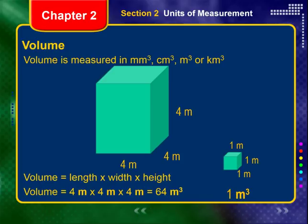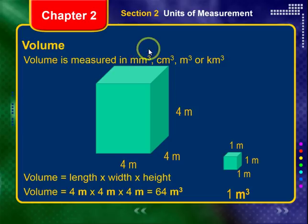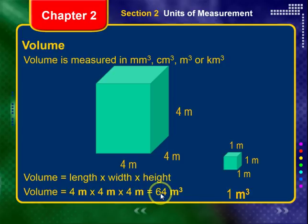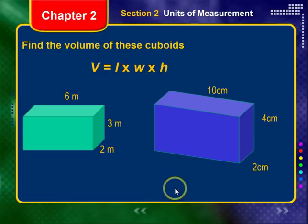The same principle applies to volume, which has three dimensions — height, width, and depth — so it's a length times a length times a length. 1 times 1 times 1 is 1, but meters times meters times meters is meters cubed. For a cube of 4 meters by 4 meters by 4 meters: 4 times 4 times 4 equals 64, and meters times meters times meters equals meters cubed — so the answer is 64 cubic meters.